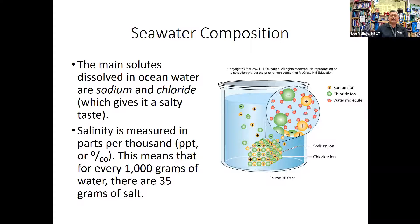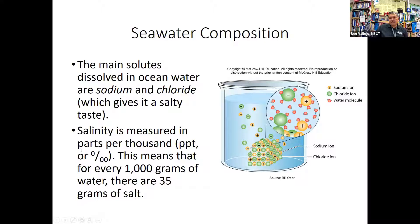The concentration of all the different solutes and minerals dissolved in seawater is not given as a percentage but as parts per thousand. This looks similar to the percent symbol but has two zeros. That's how we measure salinity. Usually we say there are 35 parts per thousand, or PPT — that's the average for ocean water.